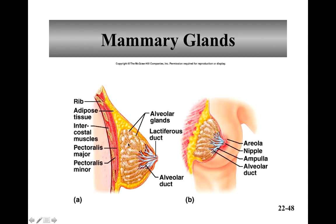Mammary glands lie over the pectoralis major muscle. You get 15 to 20 alveolar glands that produce the milk. The alveolar glands drain into the alveolar ducts, which drain into the lactiferous ducts, which then drain into the nipple. The areola is the darkening around the nipple.